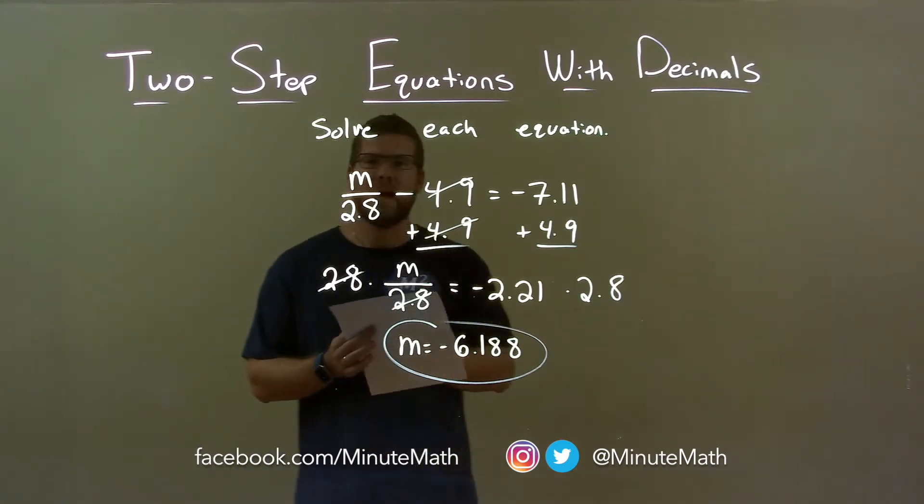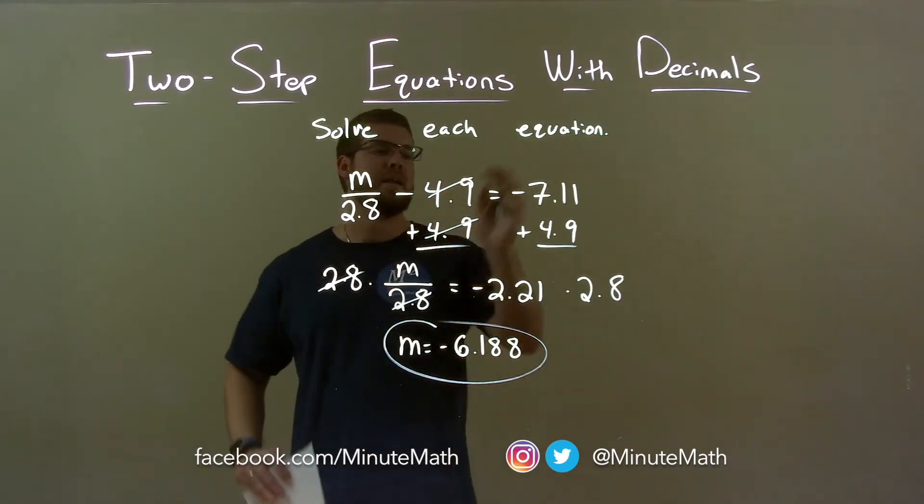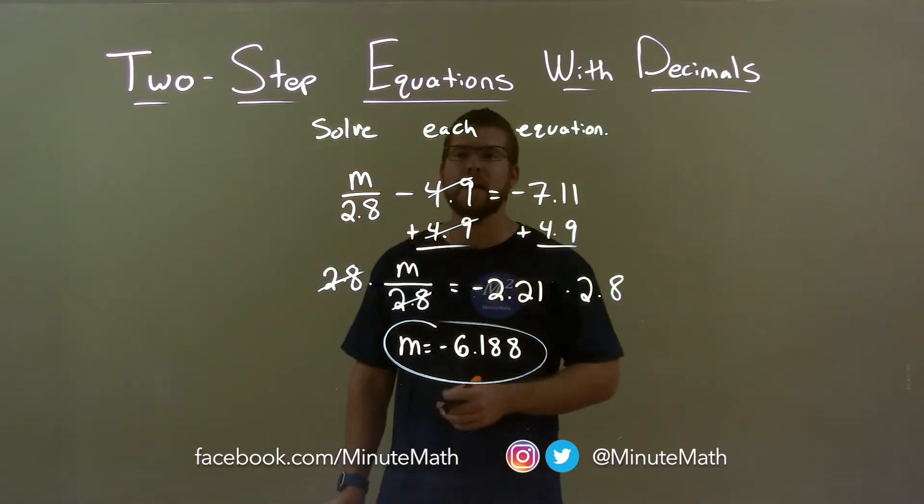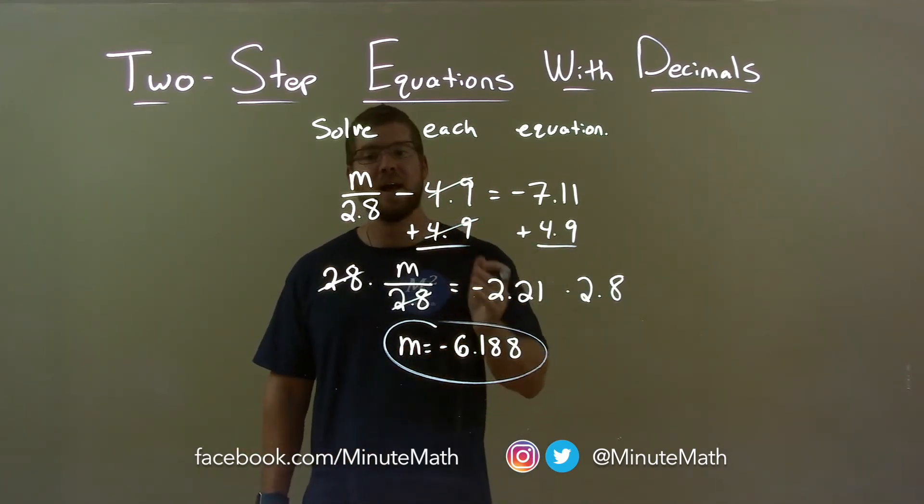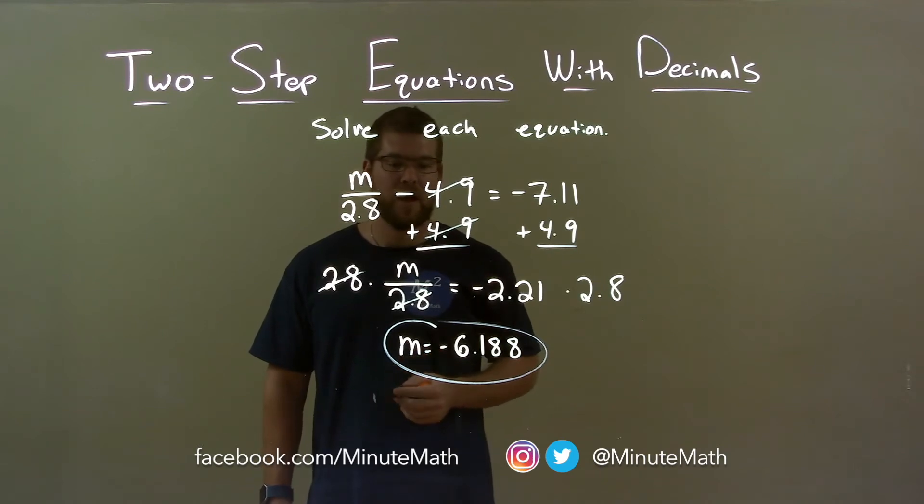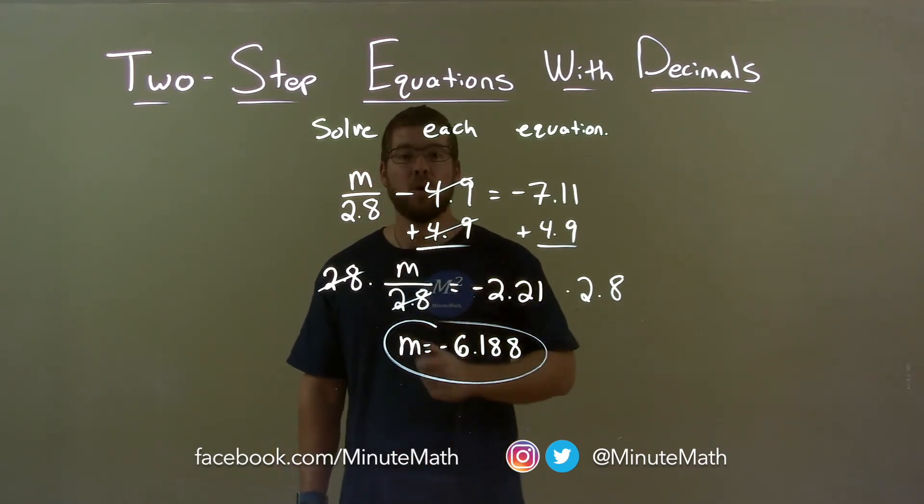Quick recap, we're given m over 2.8 minus 4.9 equals negative 7.11 and we have to solve for m. I add 4.9 to both sides, then I multiply 2.8 to both sides, giving me my final answer, m equals negative 6.188.